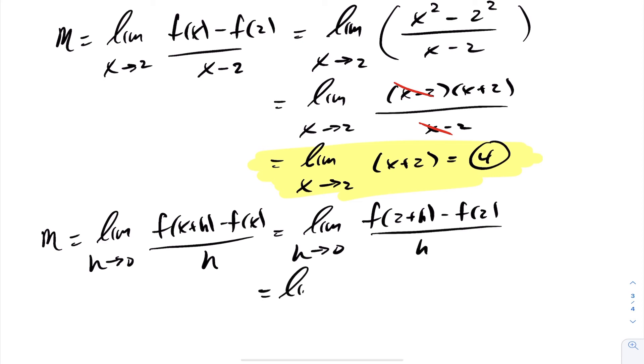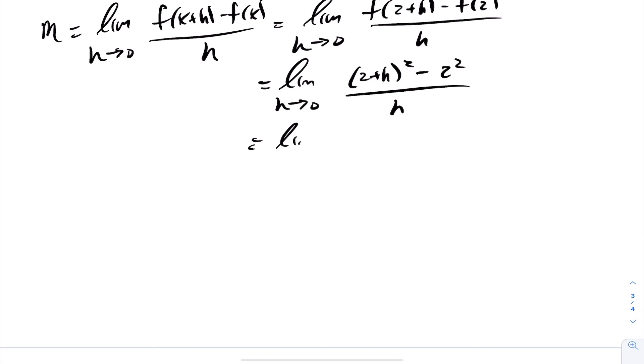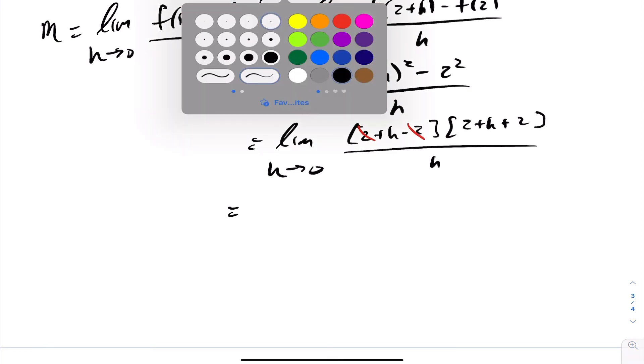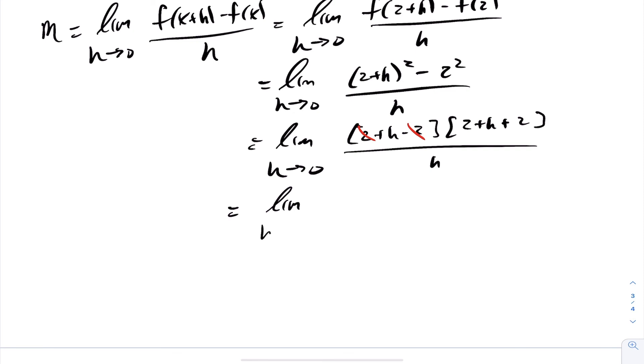This is the limit as h goes to 0 of (2+h) squared minus 2 squared over h. Continuing to evaluate, we get difference of squares like before with cancellation on the 2s. This becomes the limit as h goes to 0 of h(4+h) over h. These cancel, and then the limit as h goes to 0 of 4 plus h gives us the same answer—a slope of 4.